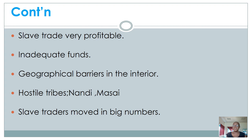Geographical barriers in the interior were another challenge. To stop slave trade, abolitionists could not stay at the East African coast alone — they had to go into the interior where slaves were being captured. However, natural barriers like rivers, mountains, and hills made it difficult. The tribes in the interior, such as the Nandi, were also very hostile and not ready to let any foreigner pass through their area, making it impossible to stop the trade there.